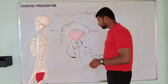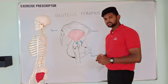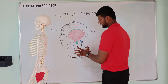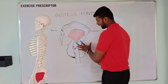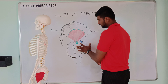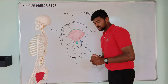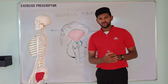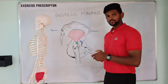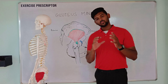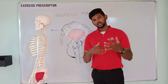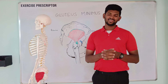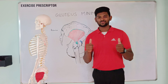One final point about the gluteus minimus muscle: deep to the gluteus minimus muscle lies the joint capsule of the hip joint and the ilium. Don't forget to like this video and check out the gluteus medius video. If you want to learn more content like this, please subscribe to our channel. Thanks for watching.